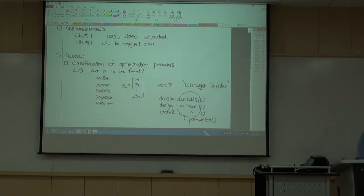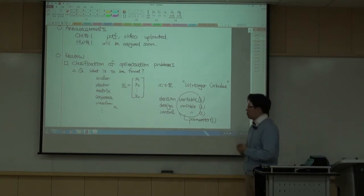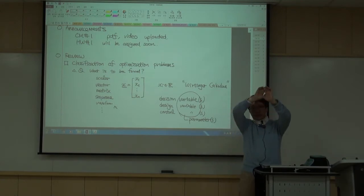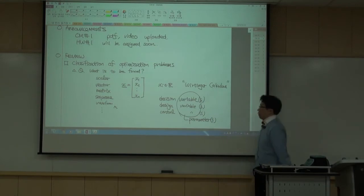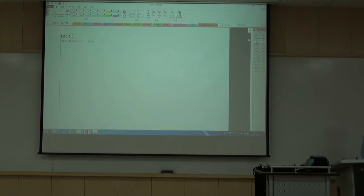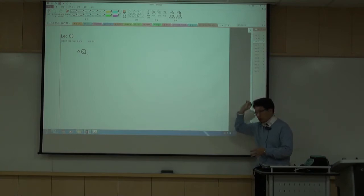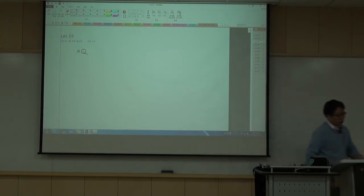I mentioned the famous Brachistochrone problem last time — you have a slope to be designed so that a sliding ball reaches the endpoint in minimum time. That is not our focus in this course, fortunately. Now, whenever we confront an optimization problem, we have decided what to find: some deterministic vector.